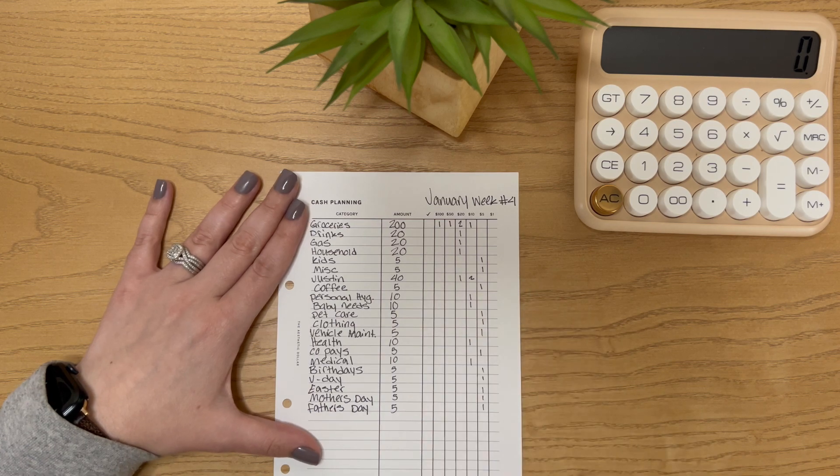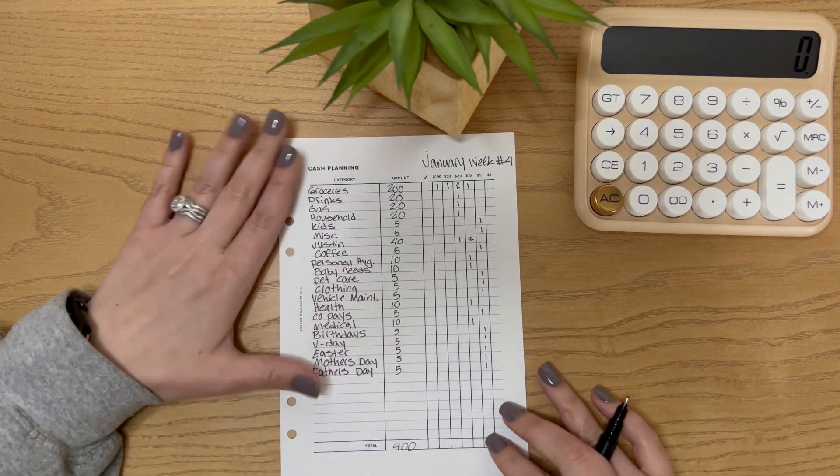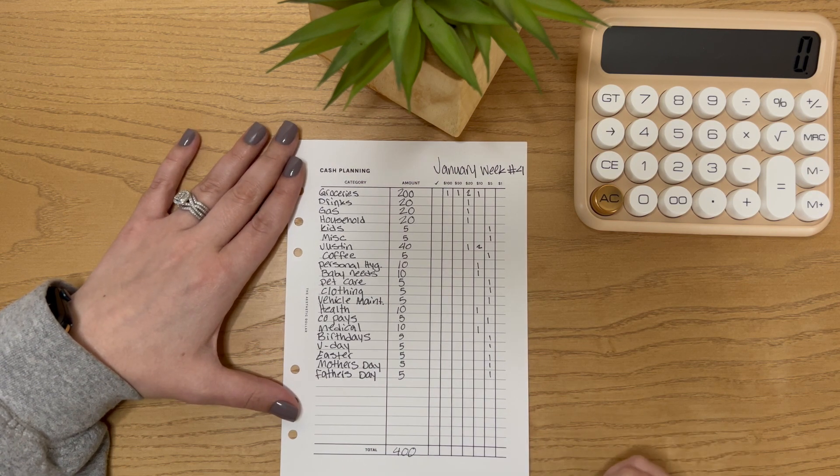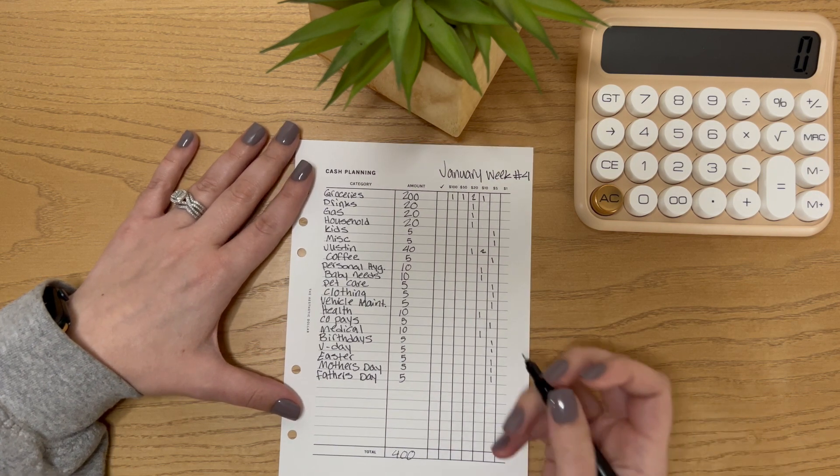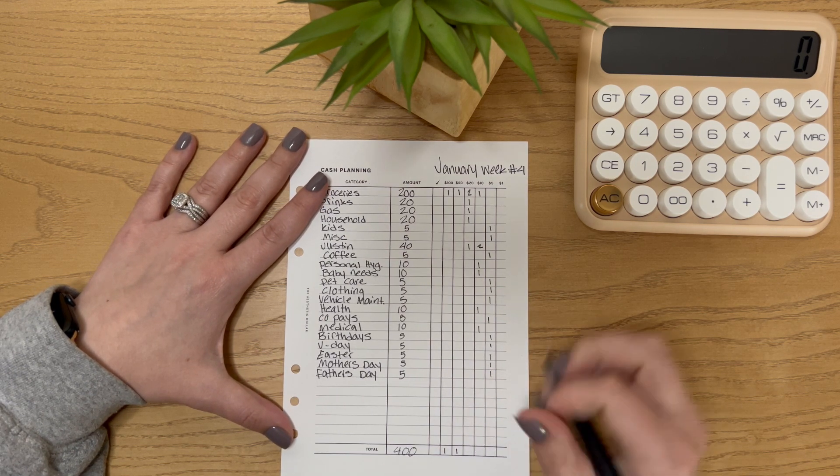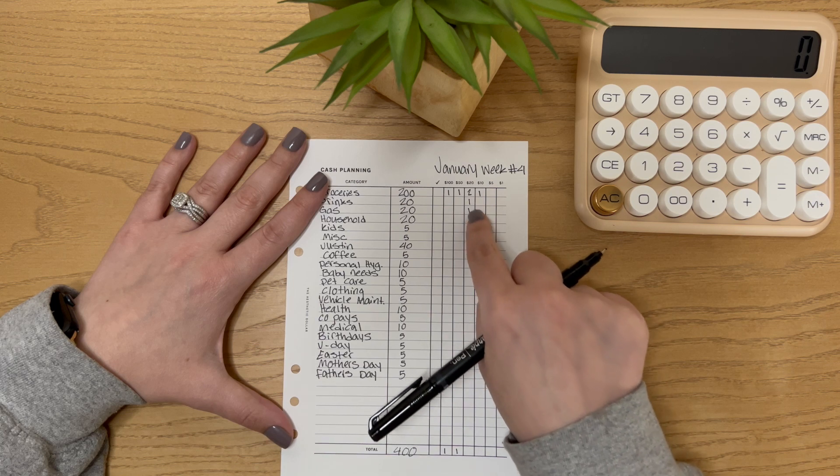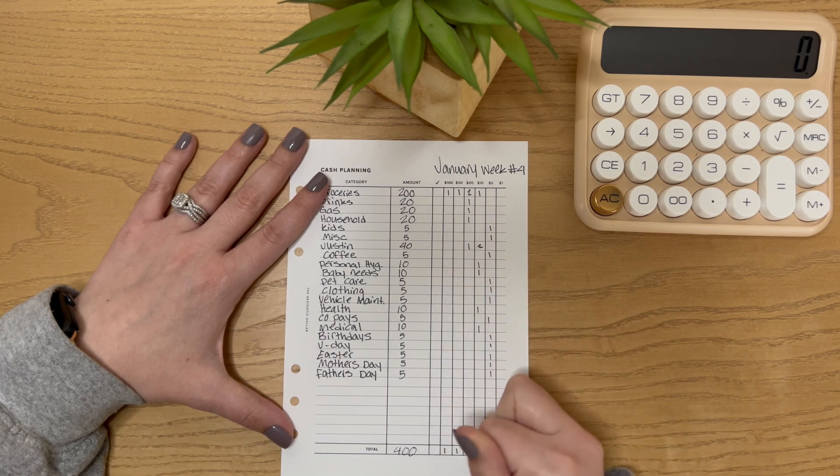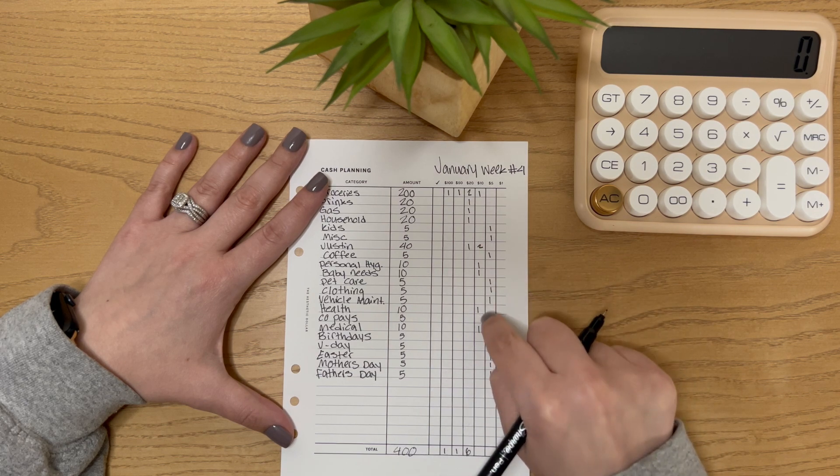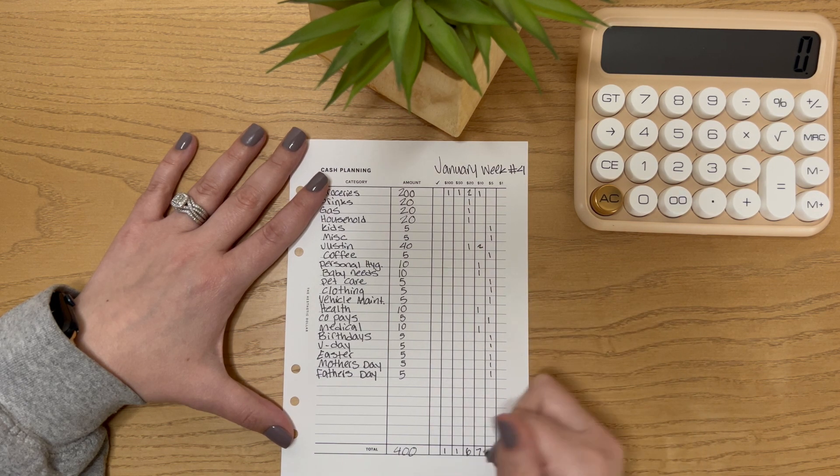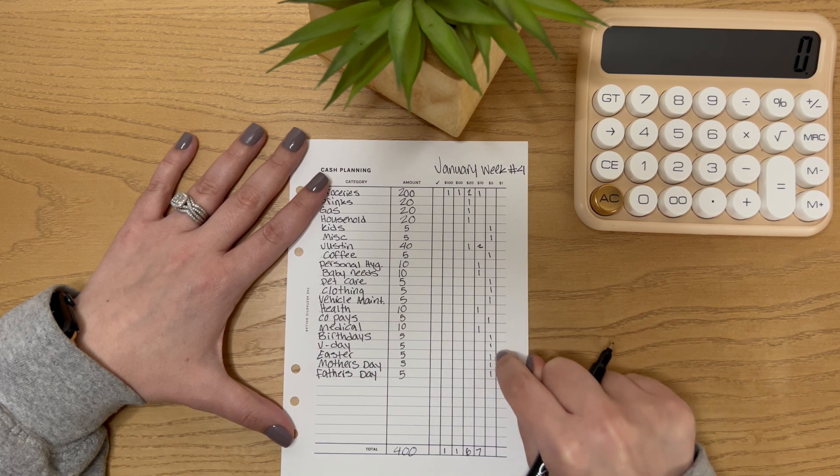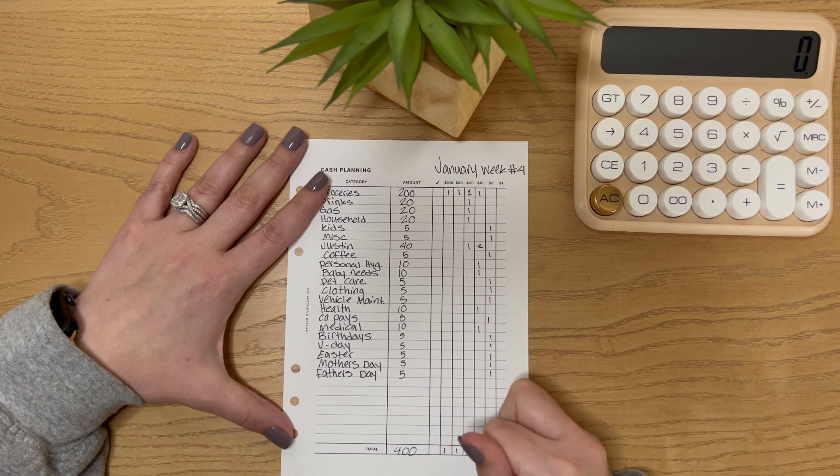So now I total up my denominations here on the bottom. That way when I go to the bank, I could just tell them how much of each denomination I would like to have. So 100, 150, 1, 2, 3, 4, 5, 6, 6, 6, 20s. 1, 2, 3, 4, 5, 6, 7, 10s. 1, 2, 3, 4, 5, 6, 7, 8, 9, 10, 11, 12, 5s.